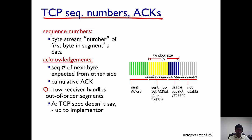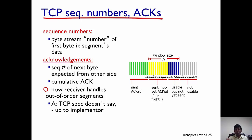What are TCP sequence numbers and acknowledgements? Sequence numbers, in a byte stream, represent the number of the first byte in the segment's data. An acknowledgement is sent from the receiver to the sender, acknowledging that data has been received, and the acknowledgement number is actually the next byte which the receiver expects from the sender. The acknowledgement is a cumulative acknowledgement, so it is ever-increasing.